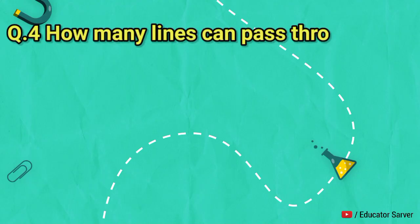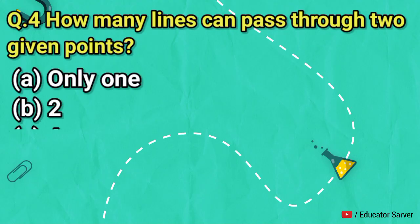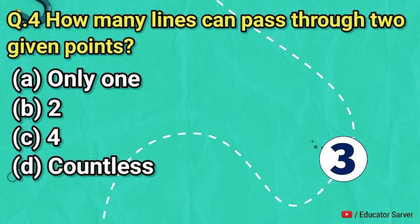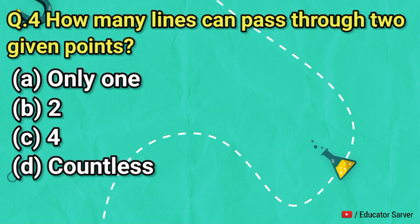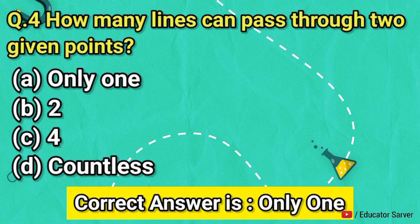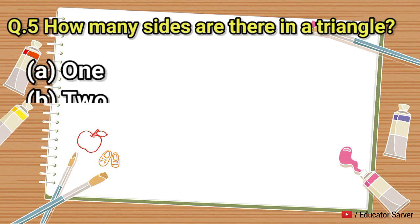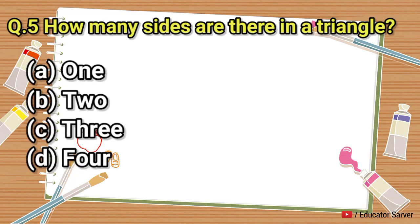Question number four: how many lines can pass through two given points? Options are only one, two, four, and countless. The right answer is only one.